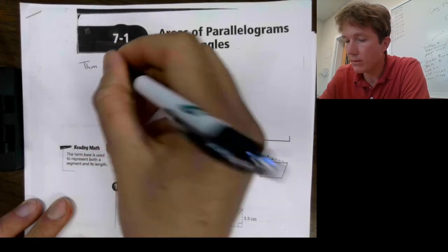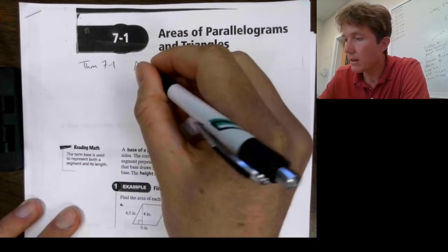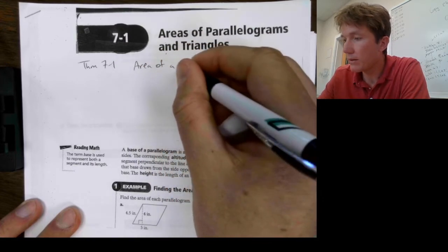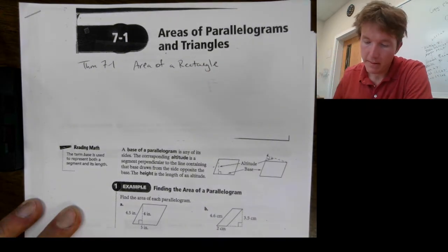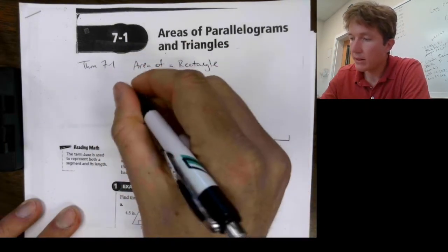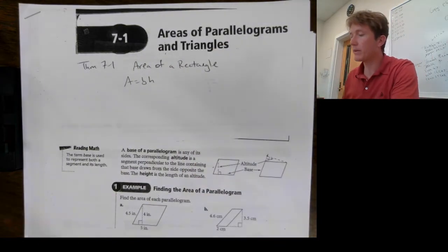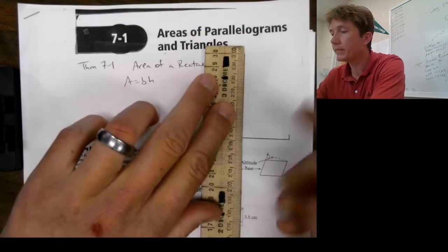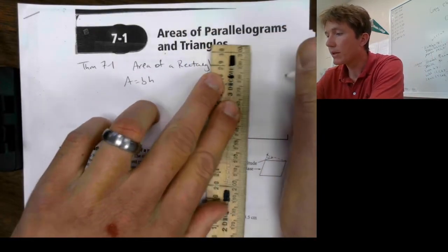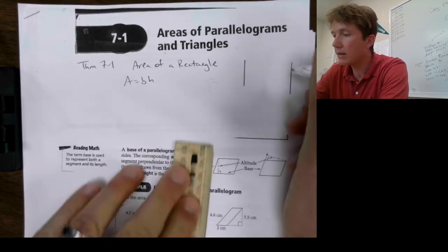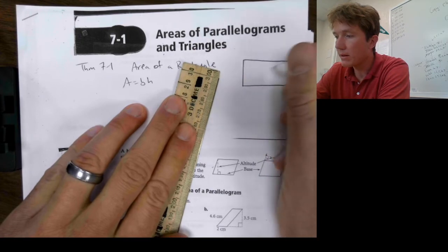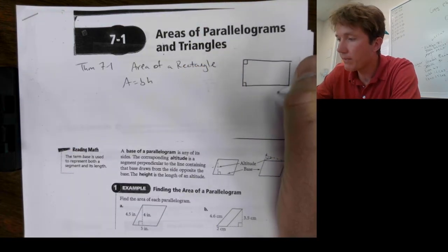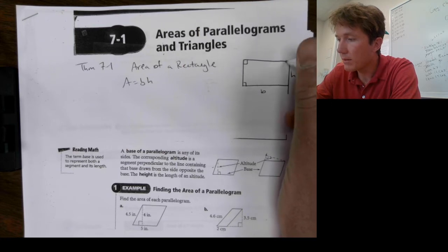So, let's go ahead and fill out the first theorem right here. This is theorem 7-1. The area of a rectangle. A rectangle is gonna be equal to base times height. So, we have a rectangle here. Pretty simple. I think you all should be familiar with that. Rectangles are simply base times height. And they're gonna have those right angles. So, whatever your base is, you multiply it by the height, then you'll get the area.